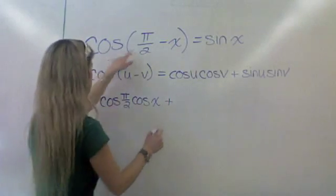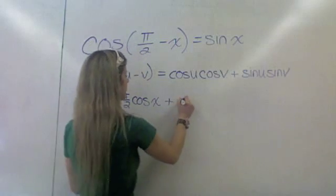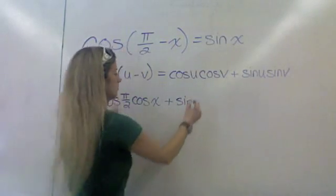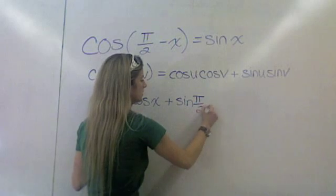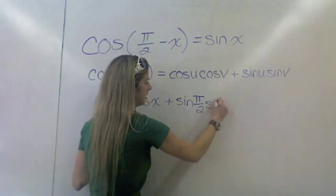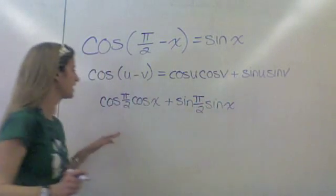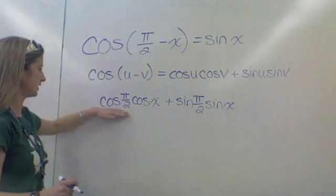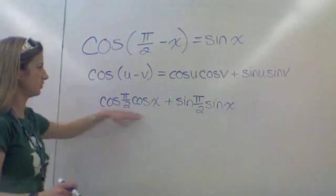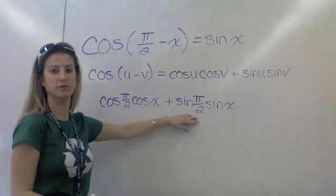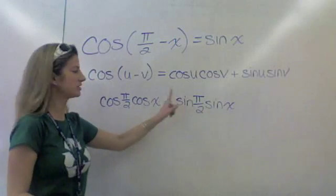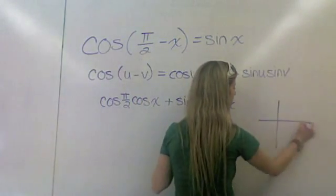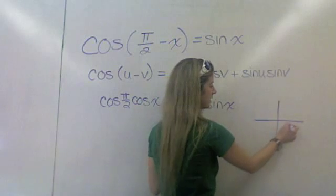So now we're going to move on to the sine term: sine of pi over 2 times sine of x. You guys probably have these memorized — cosine of pi over 2 and sine of pi over 2. But just in case you need a refresher, remember pi over 2 is 90 degrees.